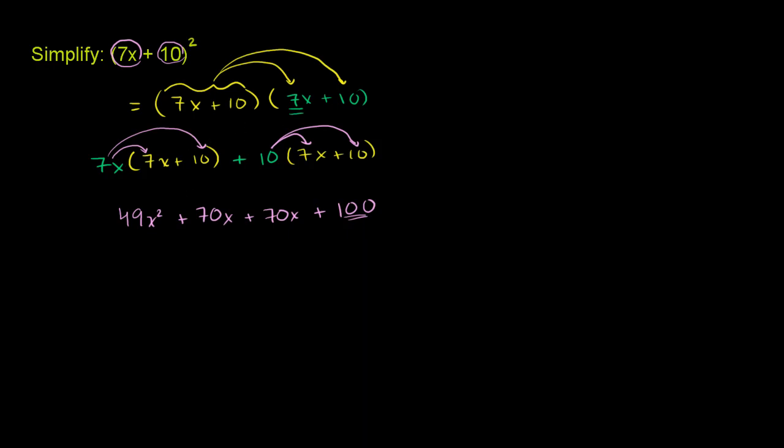So the end expression, when you simplify everything, becomes 49x² + 140x + 100.